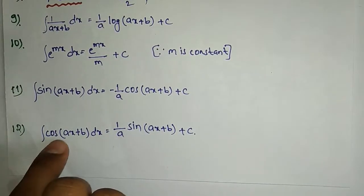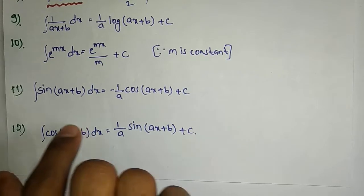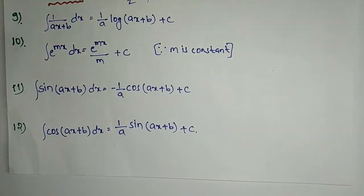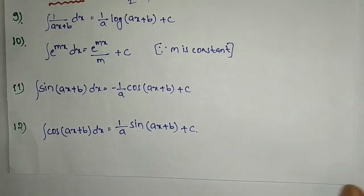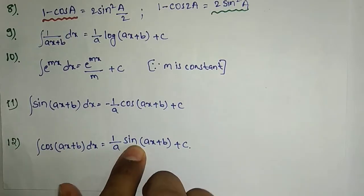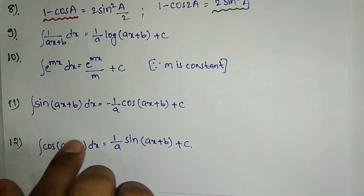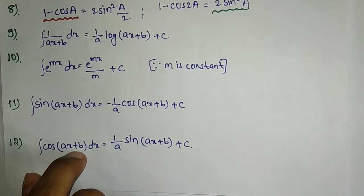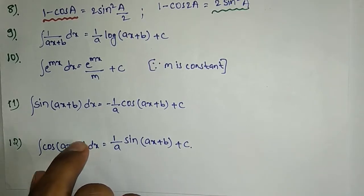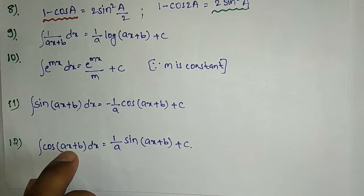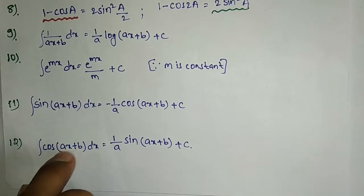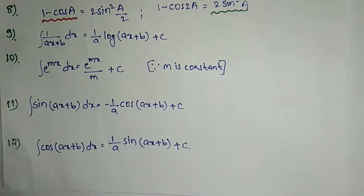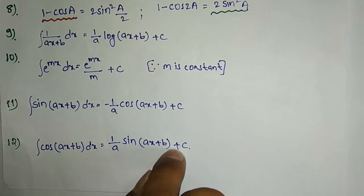Integration of cos(ax+b) dx: since ∫cos(x) dx equals sinx plus C, and the inner derivation of (ax+b) is a, we write 1/a into the denominator. So the result is 1/a · sin(ax+b) plus C.